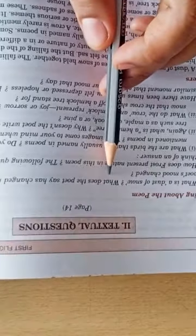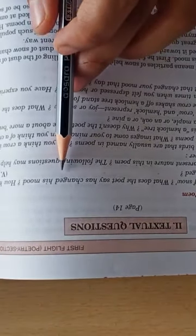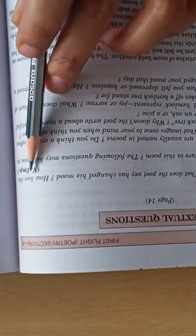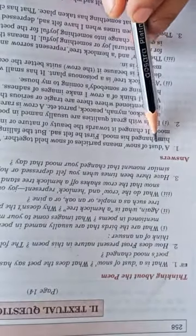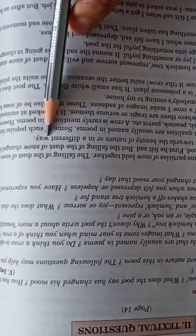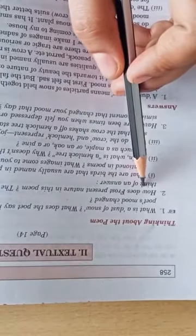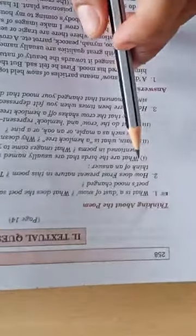Now these exercise question answers - there are questions here, one, two. In two you have three different questions and then the third one. You have three questions. I will just give you answers of these questions in this video itself. Please see that you note down these answers in your textbook, in your notebook properly, because I know you people are side by side making your notebooks also. What is the dust of snow? What does the poet say has changed his mood? How has the poet's mood changed? Answer is dust of snow means particles of snow held together. The falling of the dust of snow on him changed his mood. First he felt sad but the falling of dust of snow changed his mood.